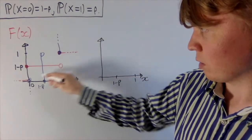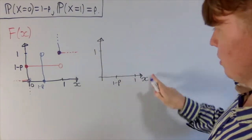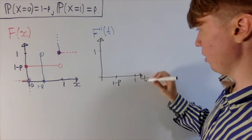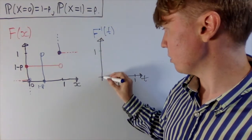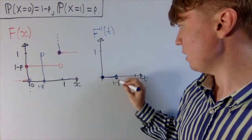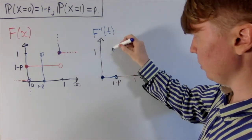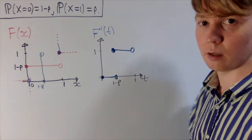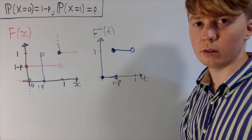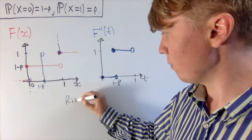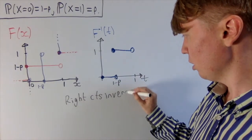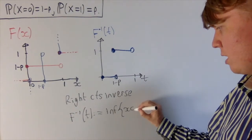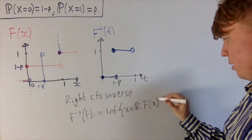Basically what we're going to do is change this blue picture a little bit. If I call this F-inverse of t, we're going to modify it: instead of taking the value 0 at 1 minus p, we now jump up to take the value 1 at 1 minus p. And then something strange happens at t equals 1 — we actually jump up to infinity, but we don't really care about that for the sake of using the uniform distribution. This is what we call the right-continuous inverse, and I'll show you how you define this more rigorously.